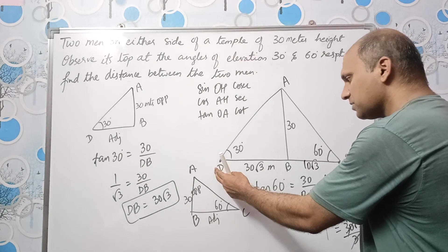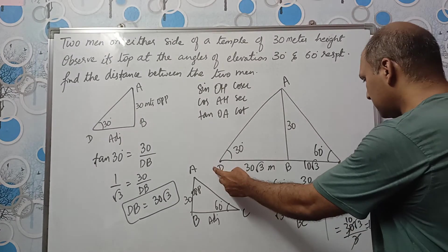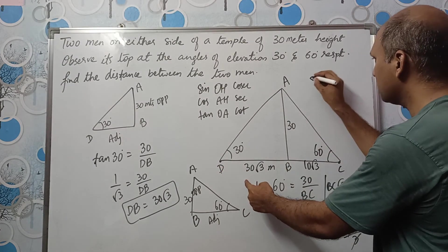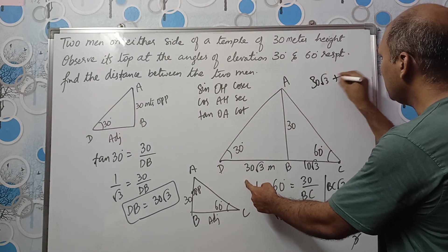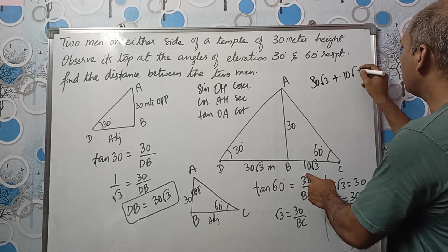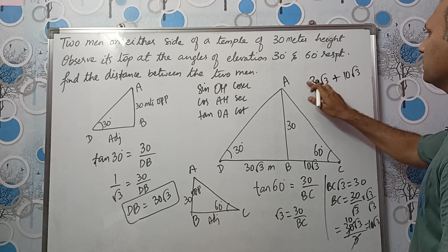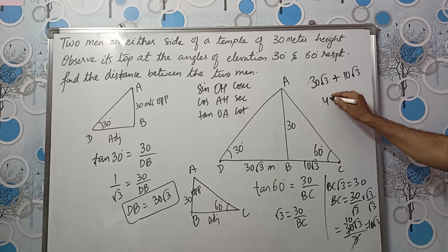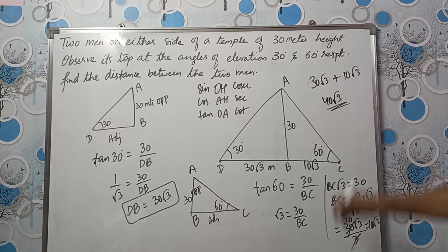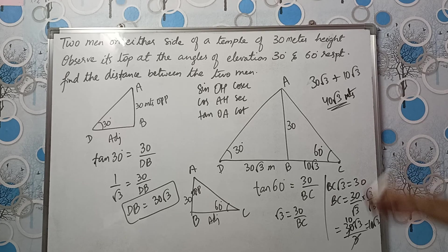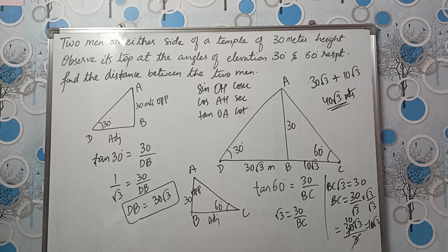Now we need to find the distance between two men, that means DC. DC is equal to 30 root 3 plus 10 root 3 is equal to 40 root 3. So the distance between the two men is 40 root 3 meters. I hope you understood this problem. See you in the next video.